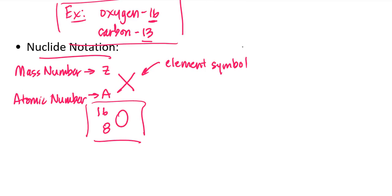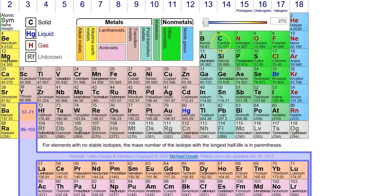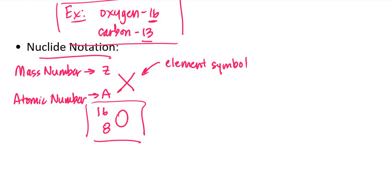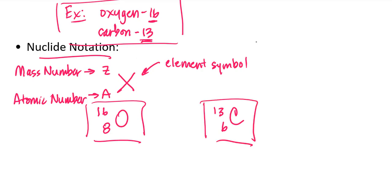Now for carbon: looking at the periodic table, carbon's symbol is C and its atomic number is 6. Writing nuclide notation for carbon-13, I use the element symbol C, write 6 in the lower left for the atomic number, and from the hyphen notation the mass number is 13, so I write 13 in the upper left. This is the nuclide notation for the carbon-13 isotope.